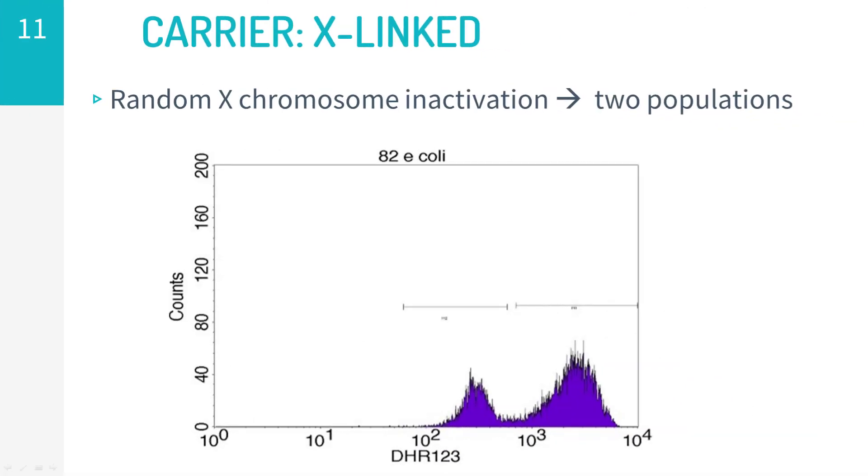When picking a control for the DHR test, it is preferable to avoid family members. In particular, the mother of a male patient suspected to have X-linked CGD may be a carrier of the mutated allele. If she is a carrier, due to random inactivation of the X-chromosome, two populations of neutrophils are evident on the DHR test, which results in a double peak, one due to the cells with a non-functional NADPH oxidase, and a second due to cells that can oxidize DHR regularly.